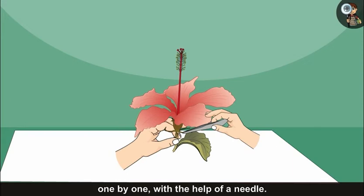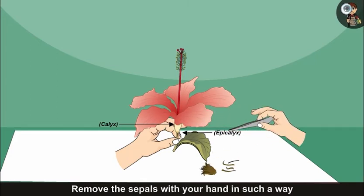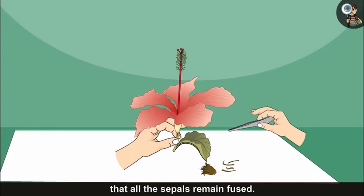Just above the stalk, the green-colored calyx and epicalyx: remove the sepals with your hand in such a way that all the sepals remain fused. Display on a white sheet. This is the gamosepalous calyx.